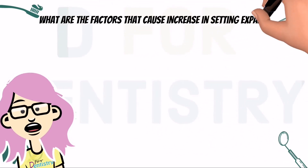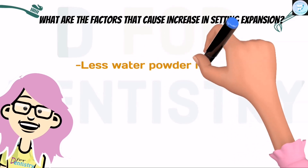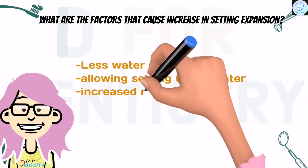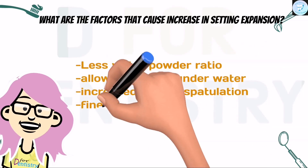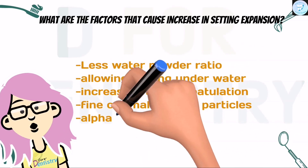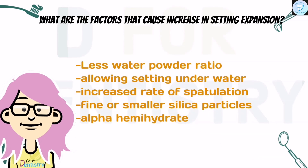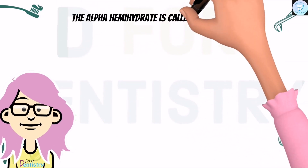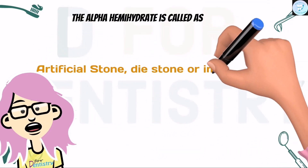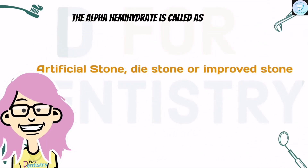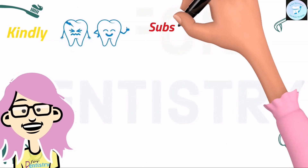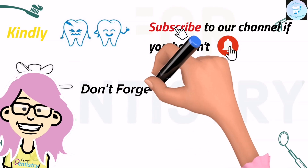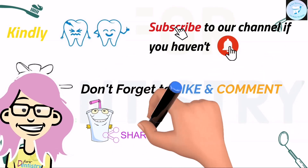What are the factors that cause an increase in setting expansion? Less water-powder ratio, allowing setting underwater, increased rate of spatulation, use of fine or smaller silica particles, or use of alpha hemihydrate. What is the other name of alpha hemihydrate? Artificial stone, die stone, or improved stone. So guys, these were the viva questions that are generally asked. Hope you liked the video. Thank you for watching D for Dentistry.